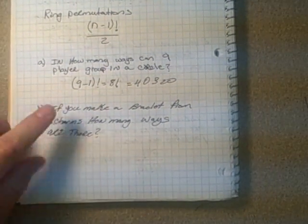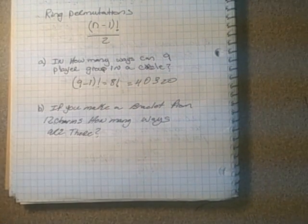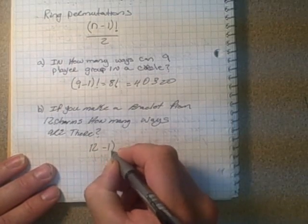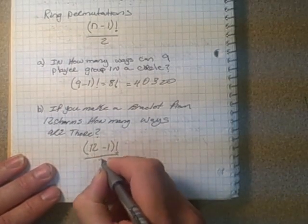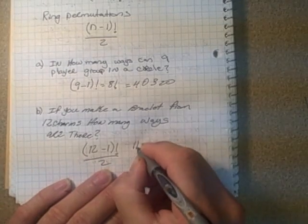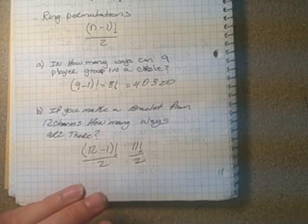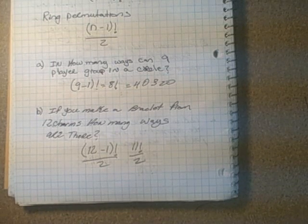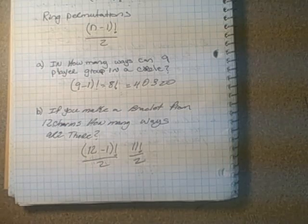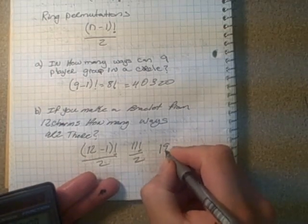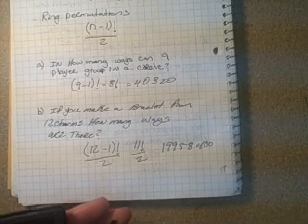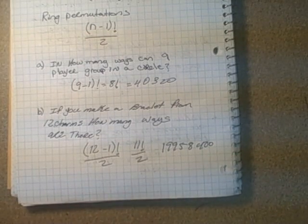Same thing with a bracelet. If you have a bracelet that's a ring and you have 12 charms on it, how many ways can you arrange it? That's (12-1)!/2, which is 11!/2. Plug that into the calculator and you get 19,958,400.